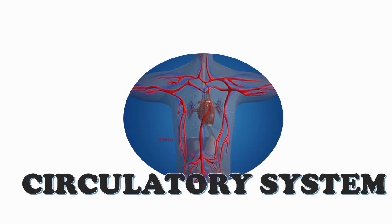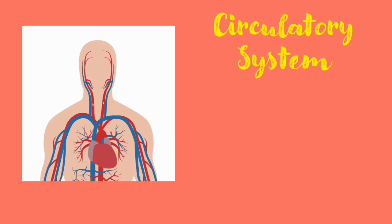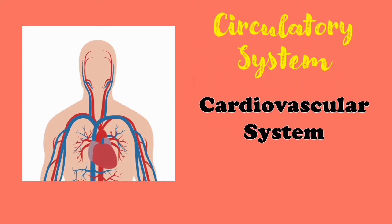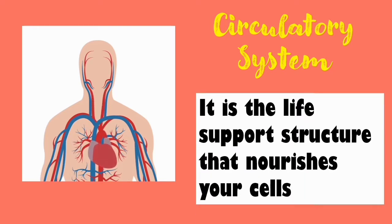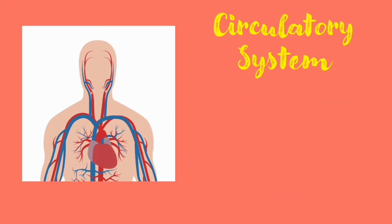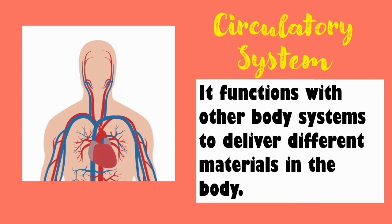Our topic for today is all about the circulatory system. The circulatory system is also known as the cardiovascular system. This system is the life support structure that nourishes your cells. It functions with other body systems to deliver different materials in the body, serving as the highway that transports substances into and out of the cells.